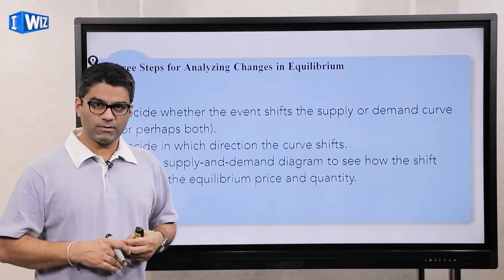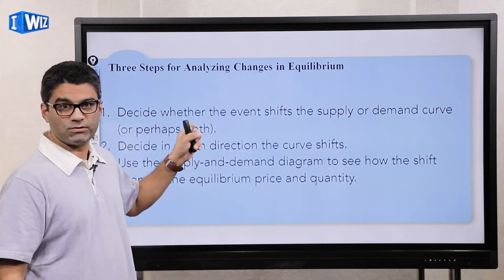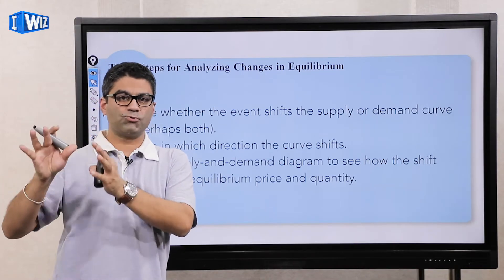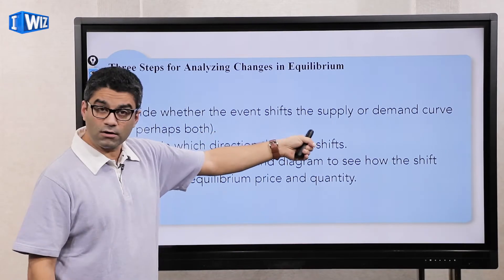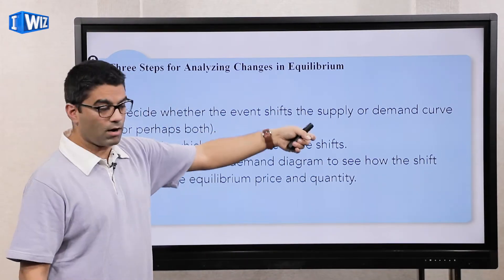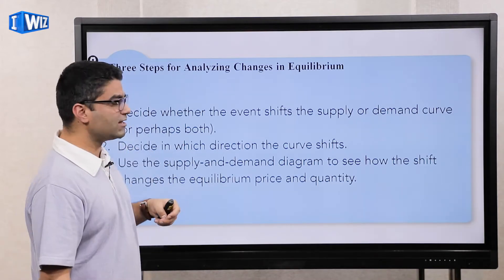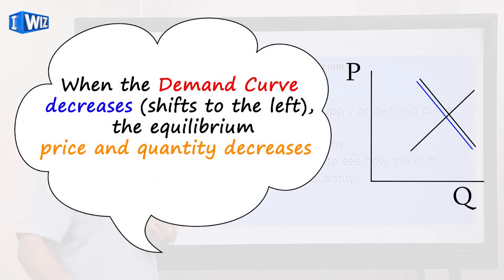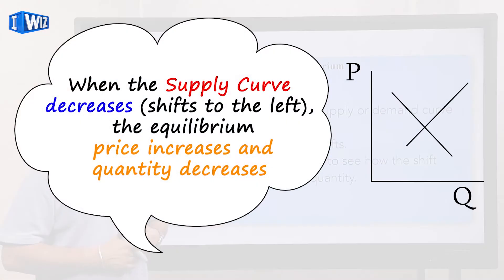Here's the basic process: if you're told to analyze what happens to equilibrium price and quantity when something changes, follow these steps. First, be clear about what market you're analyzing — that's what you draw the graph for. Next, decide whether there's a shift in the supply curve, the demand curve, or both. Then decide which direction the curve shifts — is demand increasing or decreasing, is supply increasing or decreasing? Finally, use those movements to analyze what happens to equilibrium price and quantity.